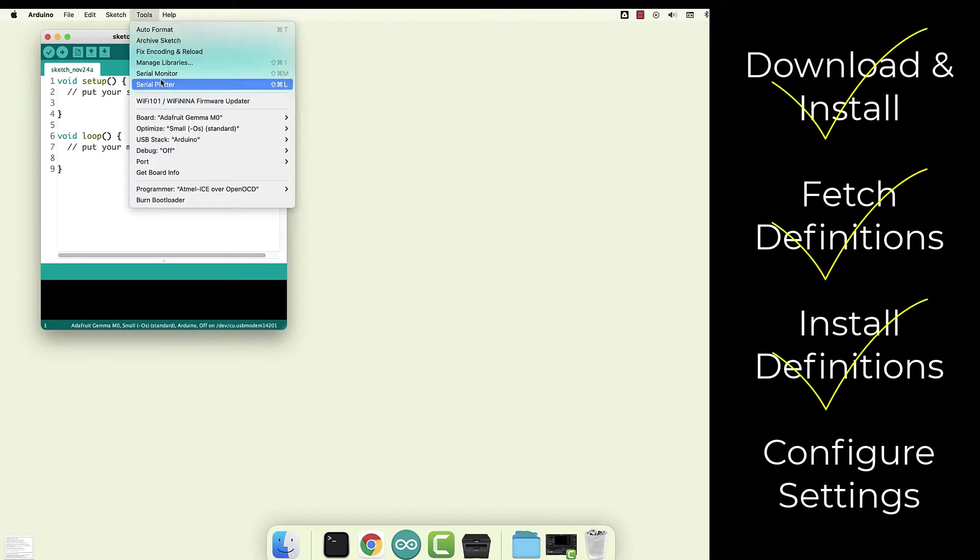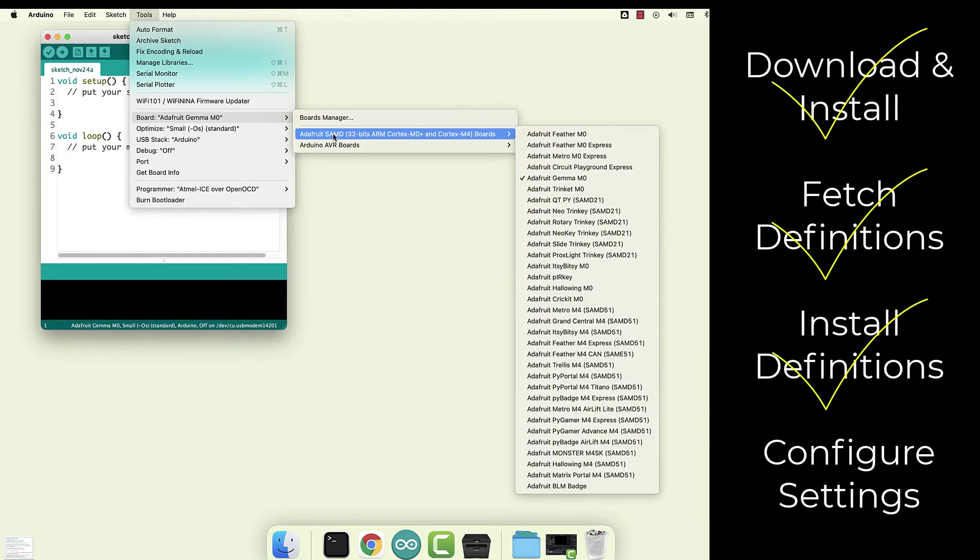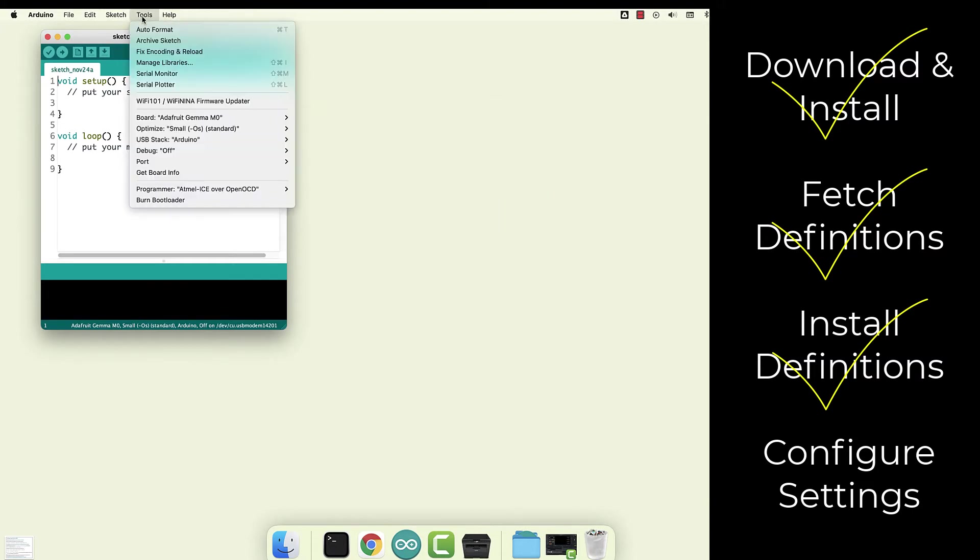There are going to be a couple more settings here that we need to configure. First, under board, this list will have changed a little. And now we have an Adafruit dropdown with all of the Adafruit definitions that we just installed. We're looking for Gemma M0 or M0. So that's the one we want selected for our board. Then back in the tools menu, you'll also want to choose a programmer. There are two options here. We want the Atmel ICE.